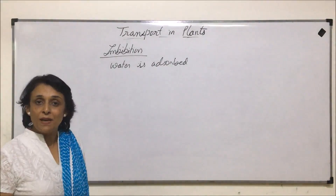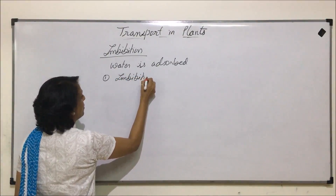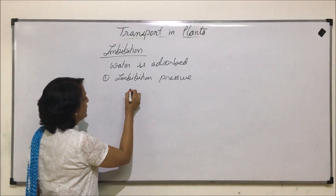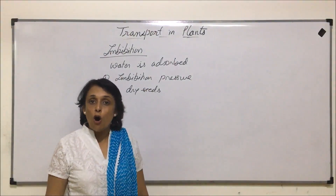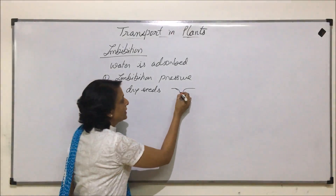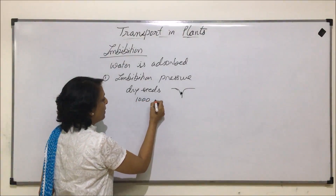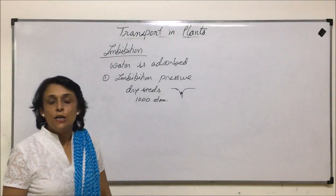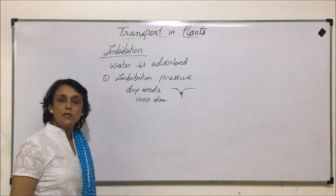There are certain changes which take place during imbibition. First, pressure is generated — what we call imbibition pressure — and this pressure is at times very useful. Say, if we talk of dry seeds that fall in thin crevices in rocks, during rains the seed imbibes water and generates pressure. One dry seed can generate a pressure up to 1000 atmospheres, which is enough to widen the crack, helping in soil formation — what we call the weathering of rocks.